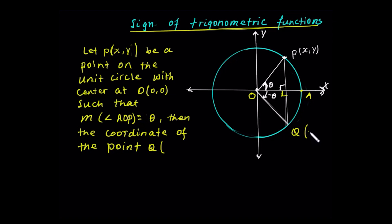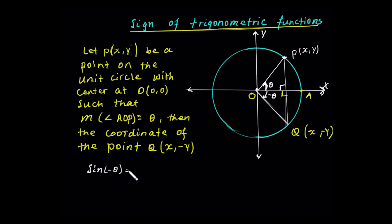If you have two coordinates — the X value is positive. On the same vertical line, the Y value is negative. Now we have two coordinates. Q has coordinates: X as it is, and the Y value is negative. If you have negative and positive, you can see the trigonometric ratio of sine, cosine and tangent. We need to determine the sign of negative theta. Y is negative Y — y is equal to the negative of the sine of theta.